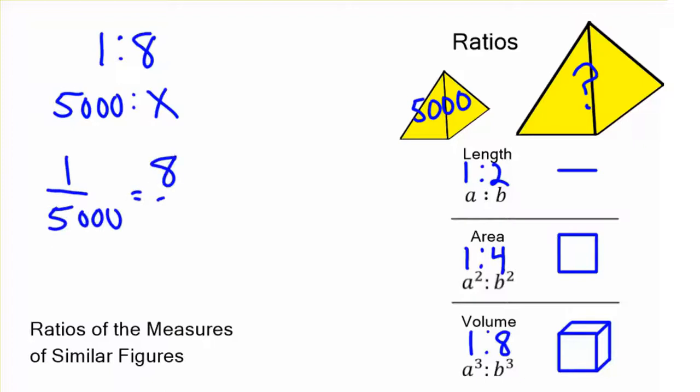1 over 5,000 equals 8 over x. If you have two ratios or two fractions that are equal to each other, that's called a proportion. And you just cross multiply. 8 times 5,000 is 40,000. 1 times x is x. You're done. That's your answer. 40,000 stones.